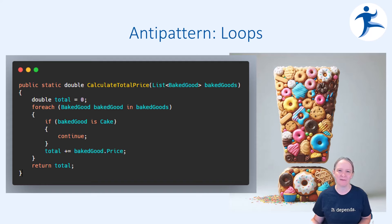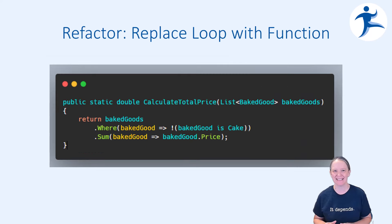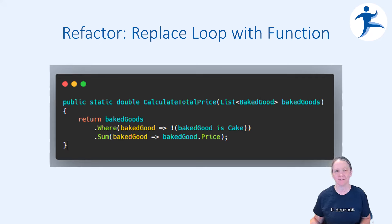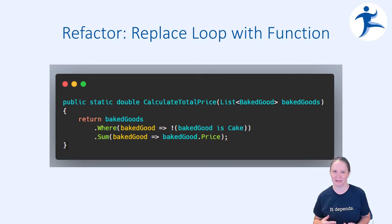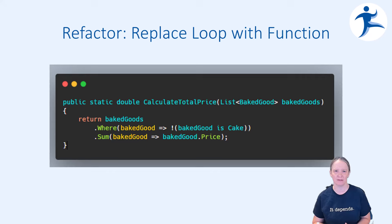Let's take a look at a more readable approach. This example uses LINQ. We're going to calculate the total price, and when we calculate that total price, we're excluding cakes. You can tell from these three lines, rather than having to go through a loop and seeing what's going on inside it. We have our collection of baked goods, we have our filter — where the baked goods are not cake — and then we have our sum. This approach is a lot more readable, a lot fewer lines of code, and it's very clear as to what's going on.